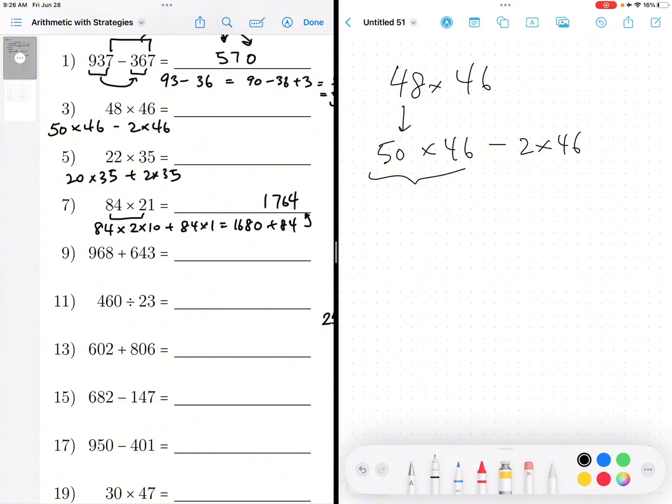But then I can also do this. I can make it times 100 and then divide it by 2. And then I know that divided by 2 is just 23. So I know it's 2,300.